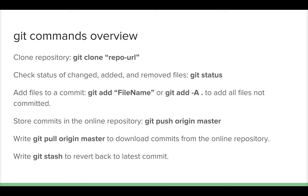Here's an overview of all commands: 'git clone <url>' to clone a repository; 'git status' to check changed, added, or removed files — recommended before committing or pushing; 'git add <filename>' or 'git add -A .' to add all files including new ones; 'git commit -m <message>' to commit; 'git push origin master' to upload commits; 'git pull origin master' to download; and 'git stash' / 'git stash pop' to manage uncommitted changes.